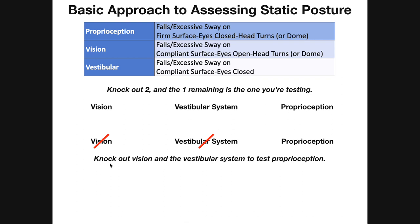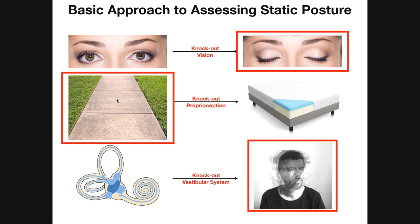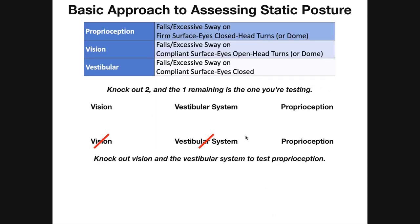For example, if I wanted to test proprioception, I'd need to knock out the other two. If I knock out vision and the vestibular system, then the one remaining — proprioception — is the one I'm testing. I'd keep the eyes closed to knock out vision, and do those head turns back and forth to knock out the vestibular system. I'd keep the person on a firm surface because I'm not trying to knock out proprioception — I'm testing it.